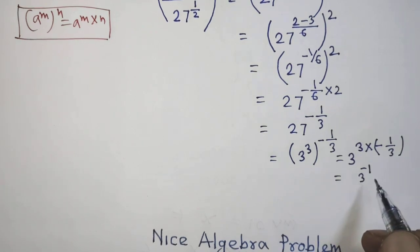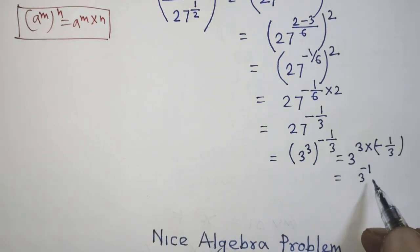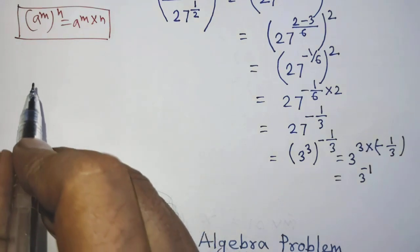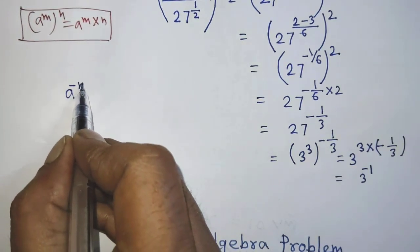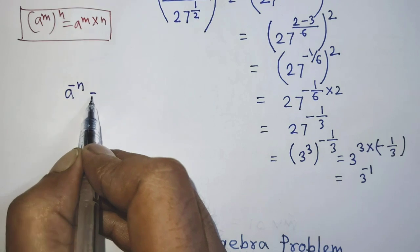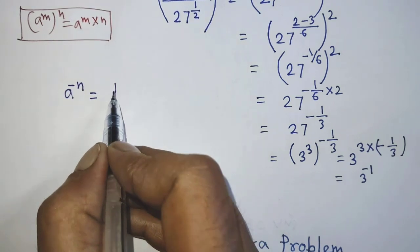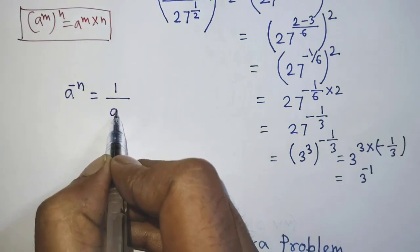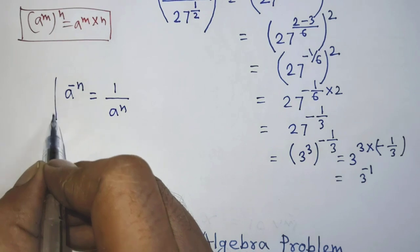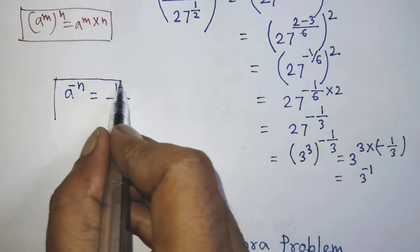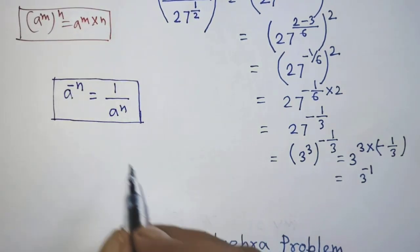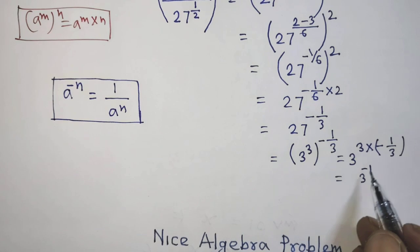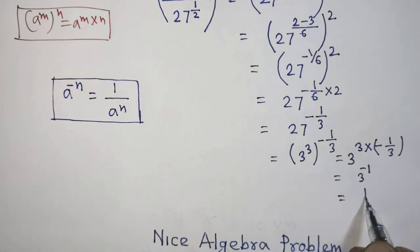Now to simplify this exponential form, we apply the formula: a to the power minus n is equal to 1 over a to the power n. So according to this formula, it will be 1 over 3.